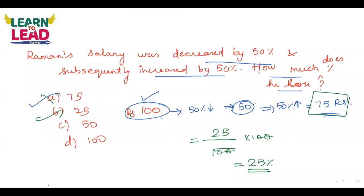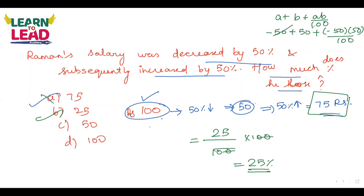Using the consecutive percentage change formula a + b + (ab/100): minus 50 plus 50 plus (minus 50 × 50)/100. The +50 and −50 cancel, leaving minus 25%. The minus sign denotes a 25% decrease in value.